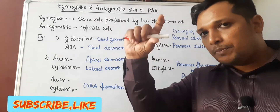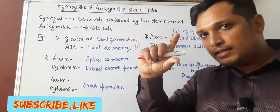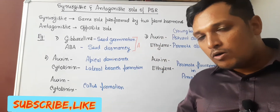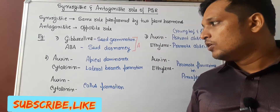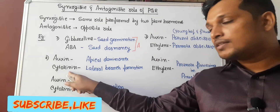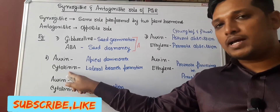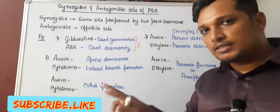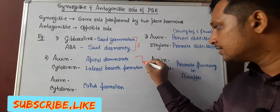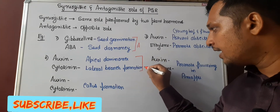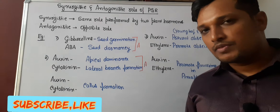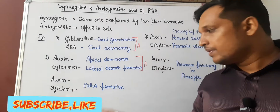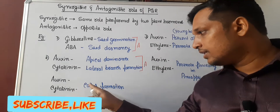Whereas apical dominance is overcome by cytokinin — it will stimulate the formation of lateral branches. These are two opposite roles, hence it is an antagonistic function. Auxin and cytokinin also have a synergistic function, whereby if you consider callus formation...